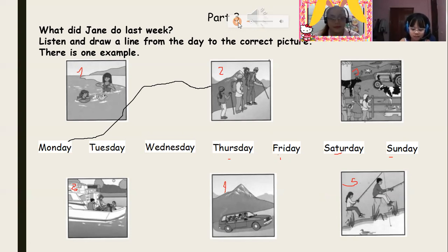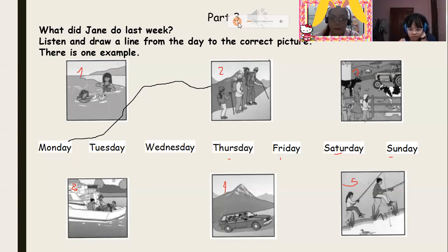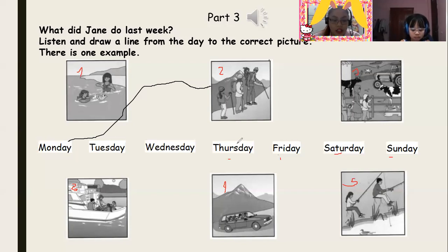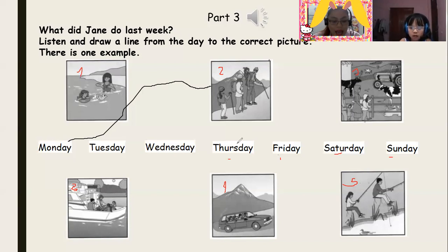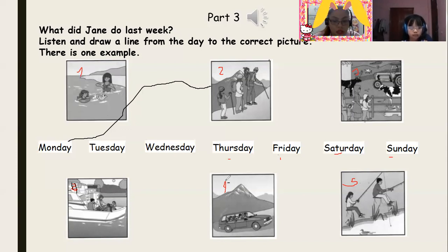Now you listen and draw lines. One: what about Thursday? Dad and I went fishing. Did you catch any fish? No — we wanted some for dinner but we didn't catch any. So what day is that? It's Thursday. What does Jane do on Thursday? She went fishing. Let's see — what number is that picture? Number six. So Thursday with number six.